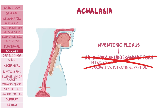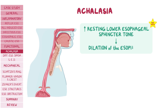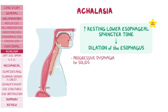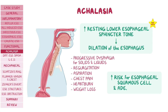There is also secondary achalasia caused by Trypanosoma cruzi infection, which causes Chagas disease, or by extraesophageal malignancies. The lack of inhibitory neurotransmitters leads to increased resting lower esophageal sphincter tone, and this obstruction leads to dilatation of the esophagus. Individuals present with progressive dysphagia for both solids and liquids, regurgitation of undigested food, aspiration, chest pain, heartburn, and weight loss. They also have an increased risk for esophageal squamous cell and adenocarcinoma.